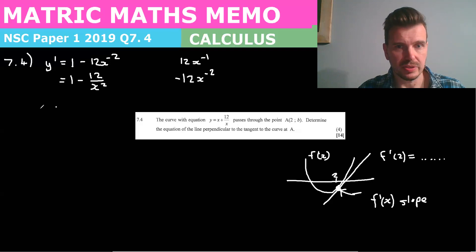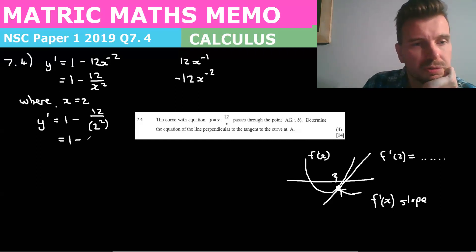y' equals 1 - 12/2^2, which is equal to 1 - 12/4, which is 1 - 3. So y' is equal to -2. So we know the slope of the tangent.